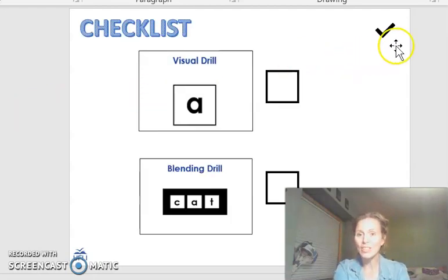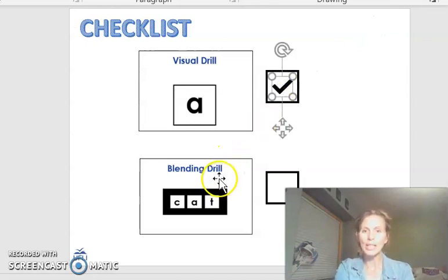All right, we're done with that. Let's go ahead and check that off just because it's fun to do a check mark. The next thing we're going to do is our blending drill. Blending helps you be able to read. If you come to a word you don't know, you can look at all of those sounds, say the sounds, and then blend them together. We're going to practice that today with this screen here.